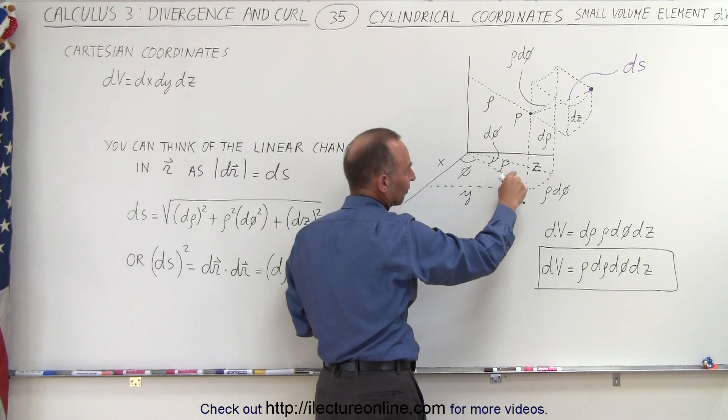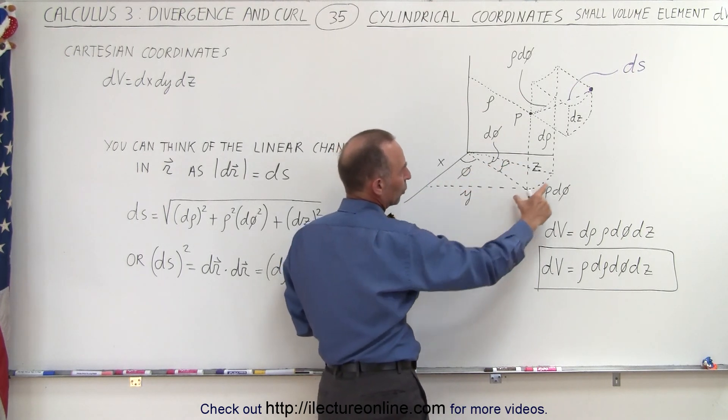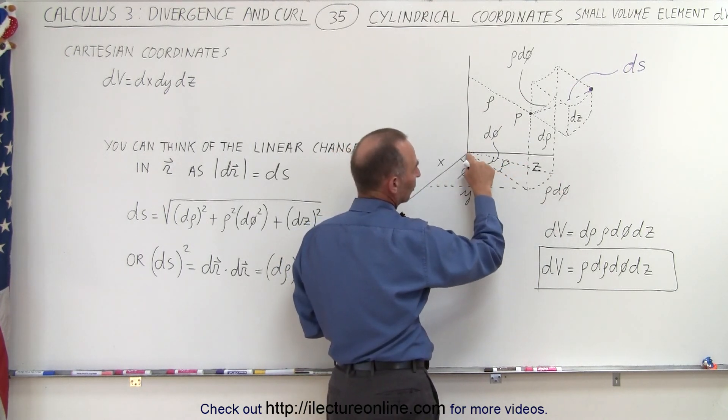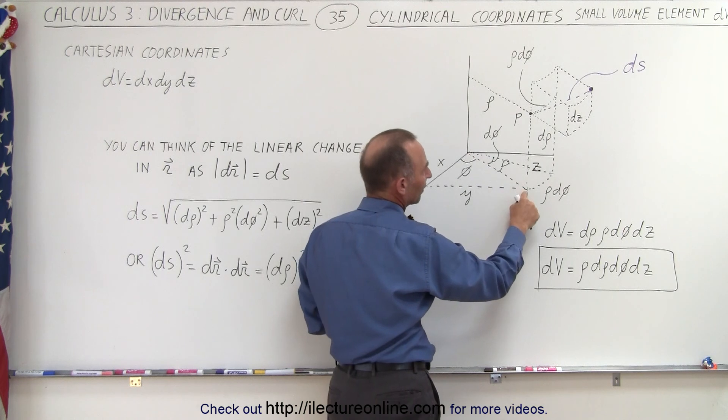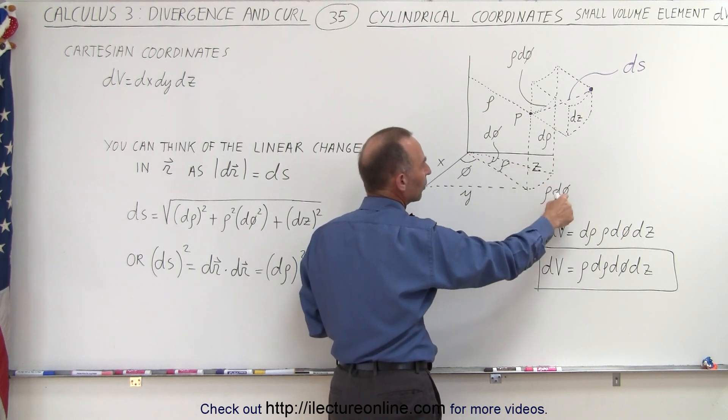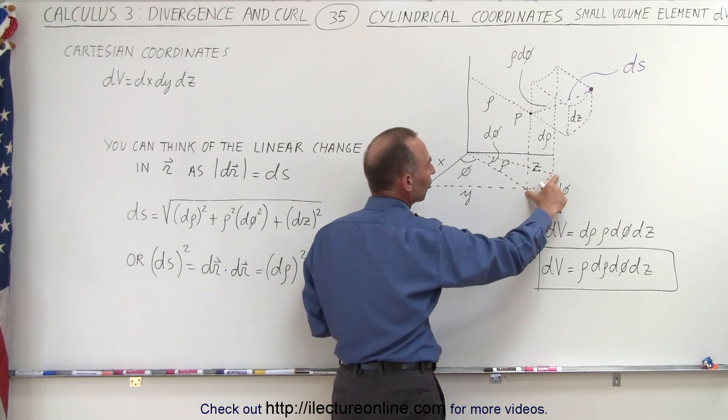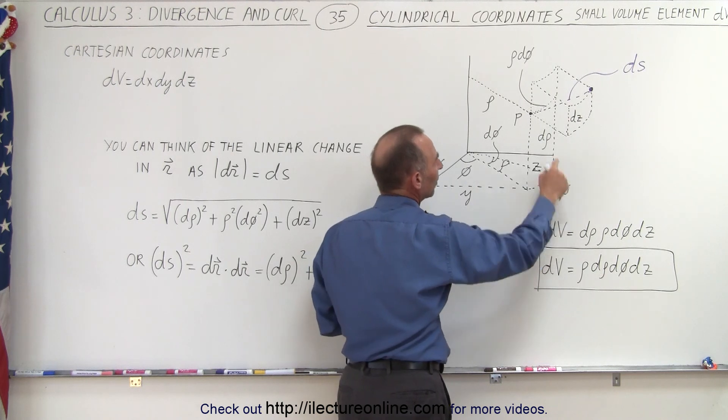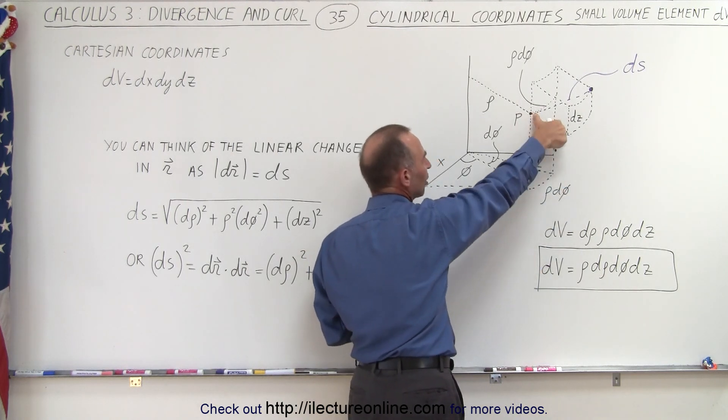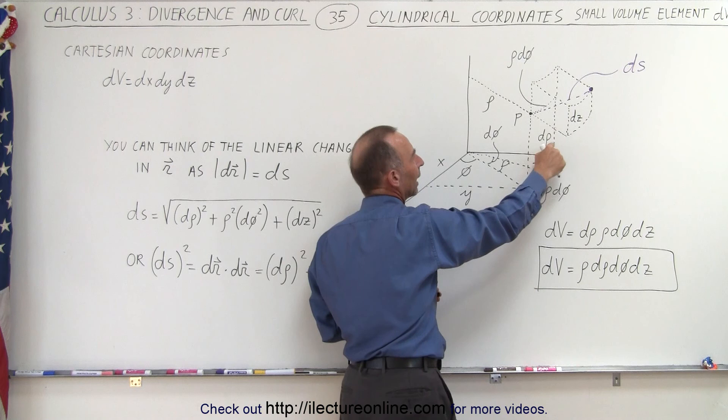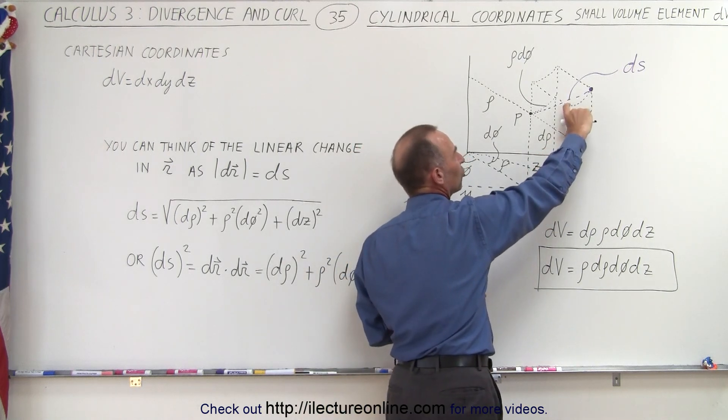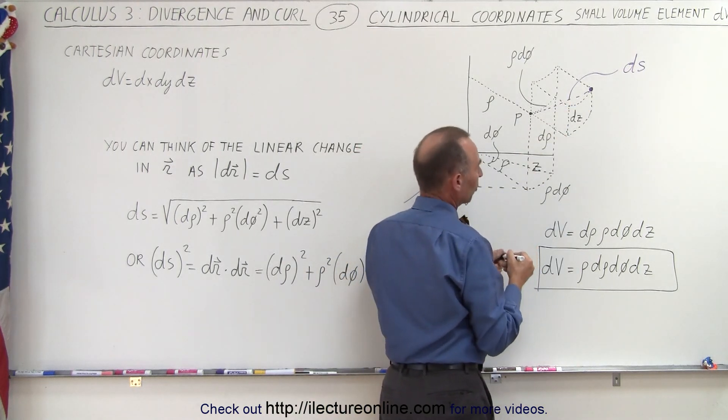Here we have a projection of that on the xy plane. Notice, this distance right here is equal to the distance from the origin to there times the change in the angle of phi. So this distance is rho d phi. The distance from there to there is a small change in rho, we call that d rho. And the distance from there to there is a small change in z called dz.